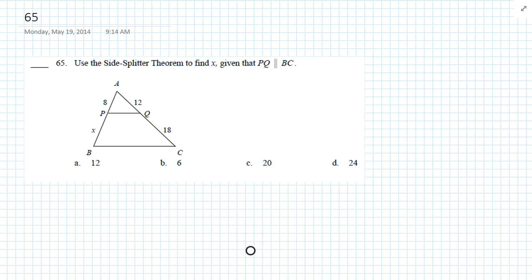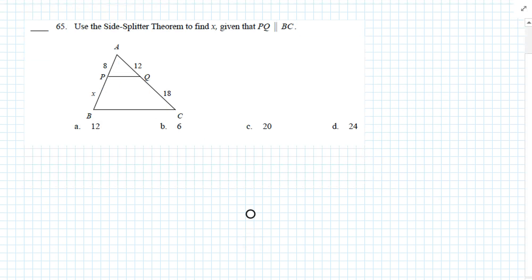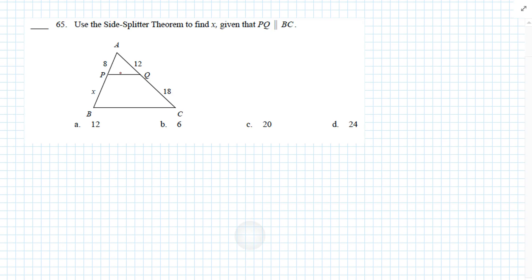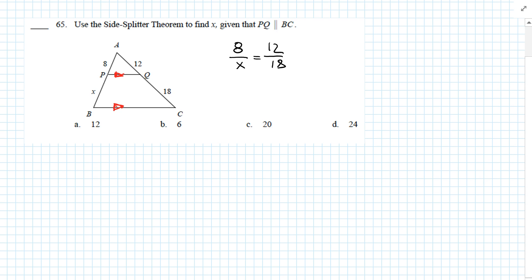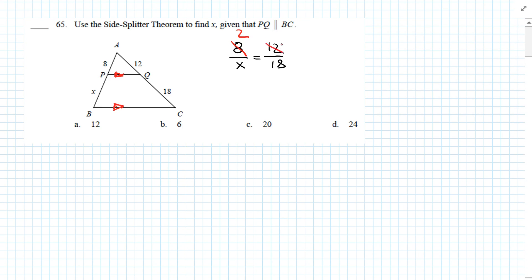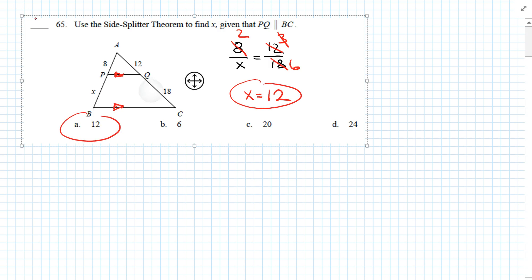Question 65: Use the side splitter theorem to find X, given that PQ is parallel to BC. Easy ratios: 8 is to X as 12 is to 18. Simplify: 4 goes into 8 twice, 4 goes into 12 three times, 3 goes into 18 six times. So X equals 12. Answer is A.